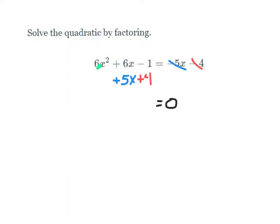So I'm going to start by moving the minus 5x — when we do that, it becomes a plus 5x on the left side, which cancels it on the right side. And then the minus 4 becomes a plus 4 on the left side, canceling it on the right. So now all we have left is 0 on the right side.